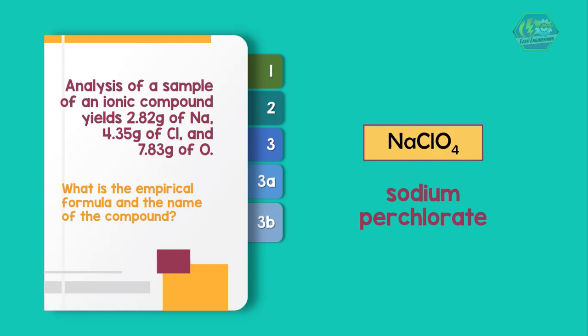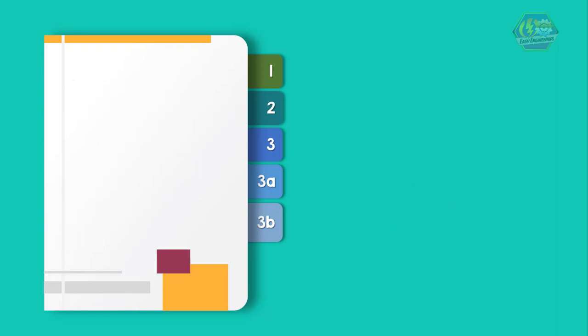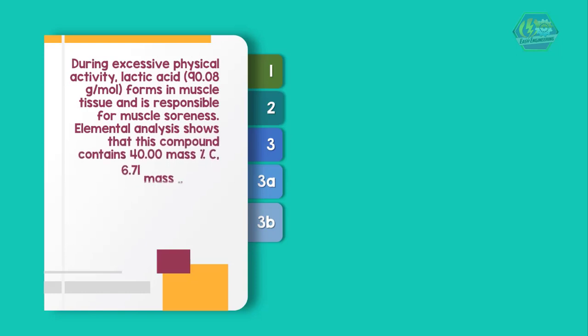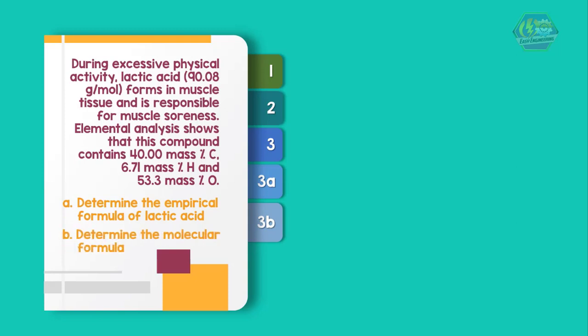Let's go to another example. During excessive physical activity, lactic acid forms in muscle tissue and is responsible for muscle soreness. Elemental analysis shows that this compound contains 40.08 mass % C, 6.71 mass % H, and 53.3 mass % O. The questions are: determine the empirical formula of lactic acid and determine the molecular formula.